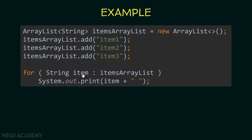In each iteration, the variable item will hold the value of an element inside this array list, separated by a colon. Inside this for loop, we have one statement: we are printing the item concatenated with a space. So in the first iteration, this variable is going to contain item 1, so we print item 1 with a space. In the second iteration, it holds item 2, so we print item 2 with a space. Finally, it will contain item 3 and we print item 3 with a space, then the for loop finishes.